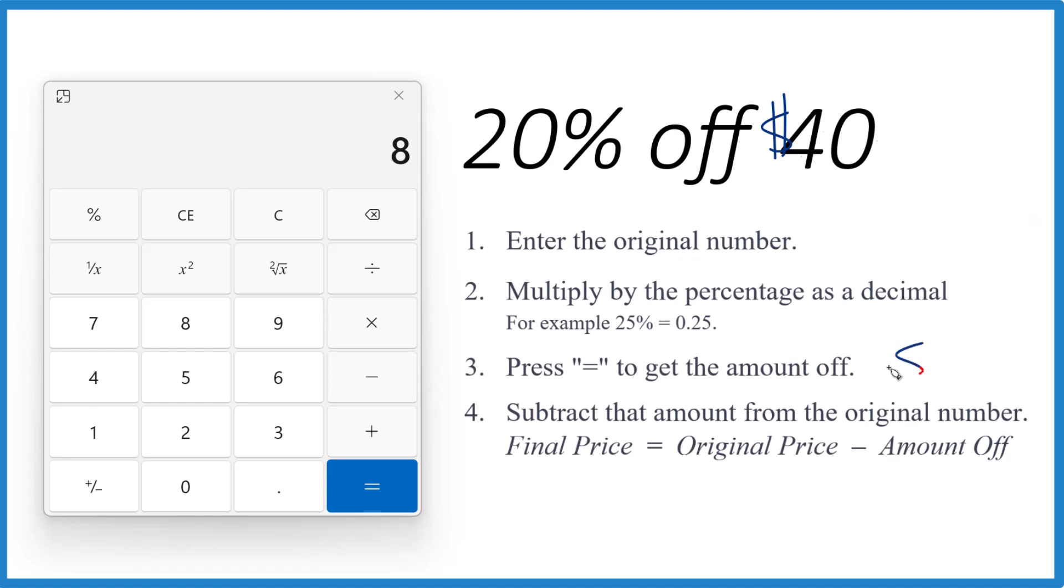So, that number 8 there, that $8, that's how much you save. Essentially, it's 20% of $40. It's a 20% portion of $40. So, you save $8.